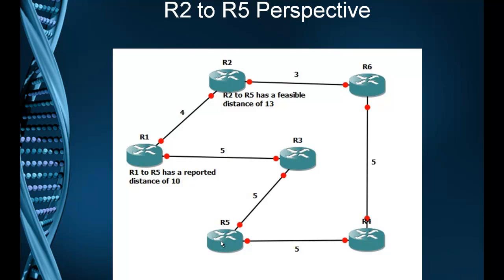That's why the topology table is there — so we can make decisions very fast and have faster convergence. If not, I have to send queries and wait for replies to come back. There's a stuck-in-active issue we'll talk about in another video, but it can take three to four minutes to converge the network if a link breaks and I don't have those routes in the topology table. From R1's perspective, R2's path would not show up in the topology table. But from R2, R1's path would because he meets the feasibility condition.